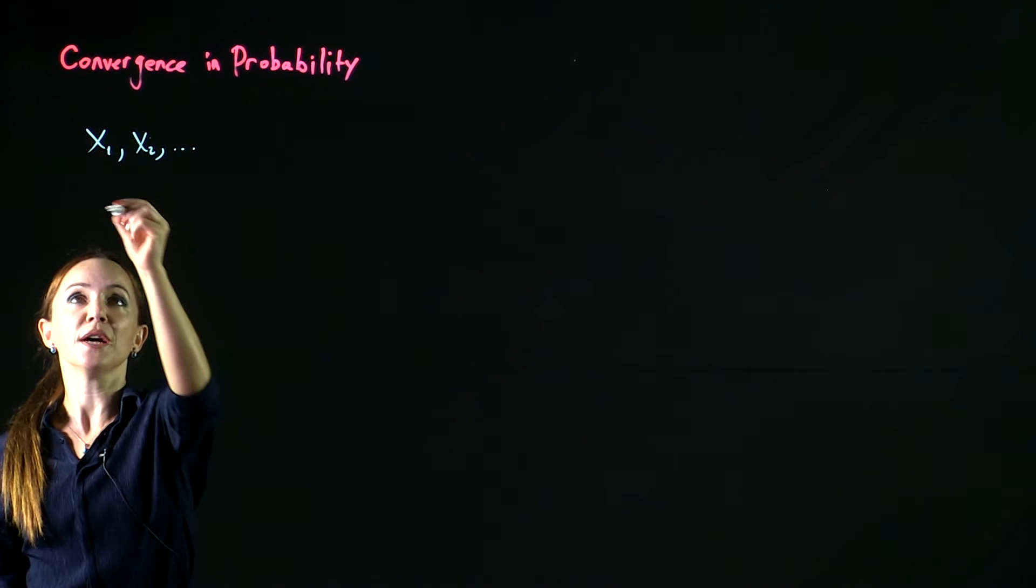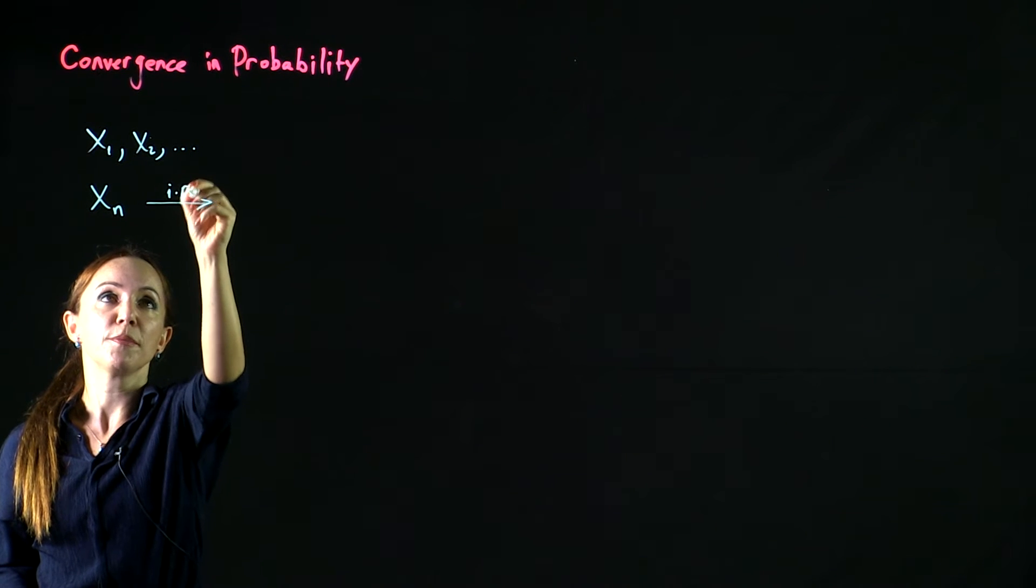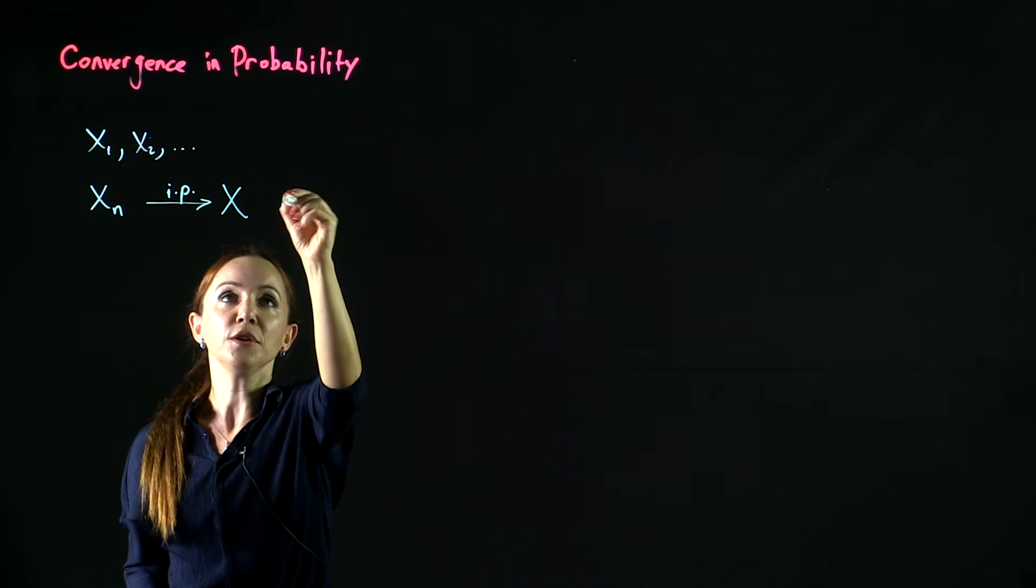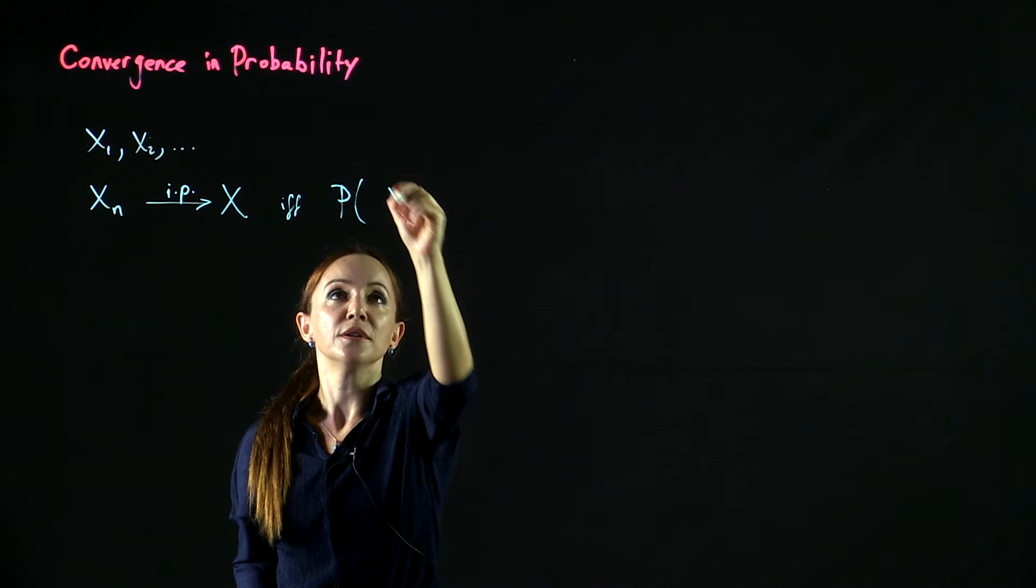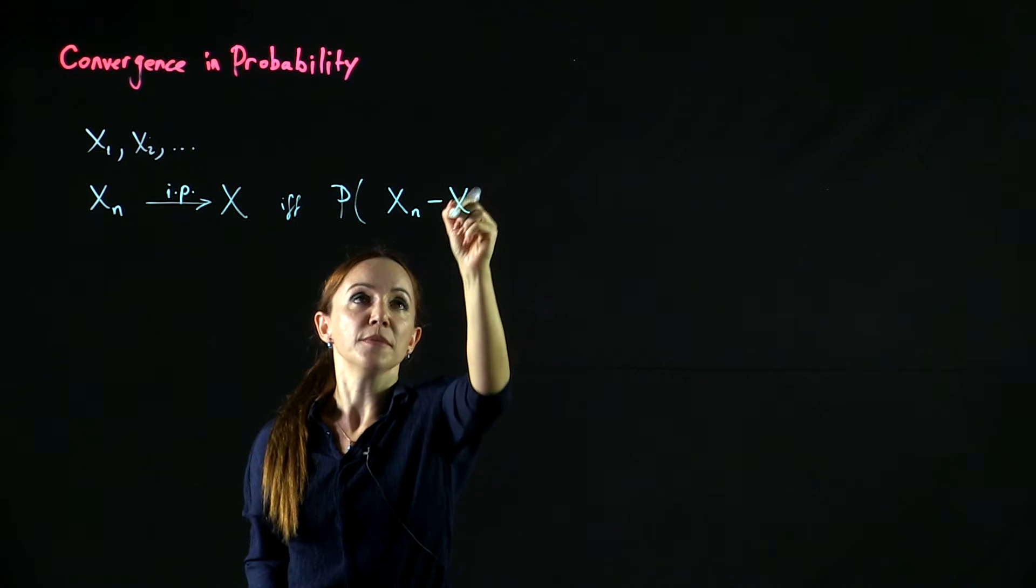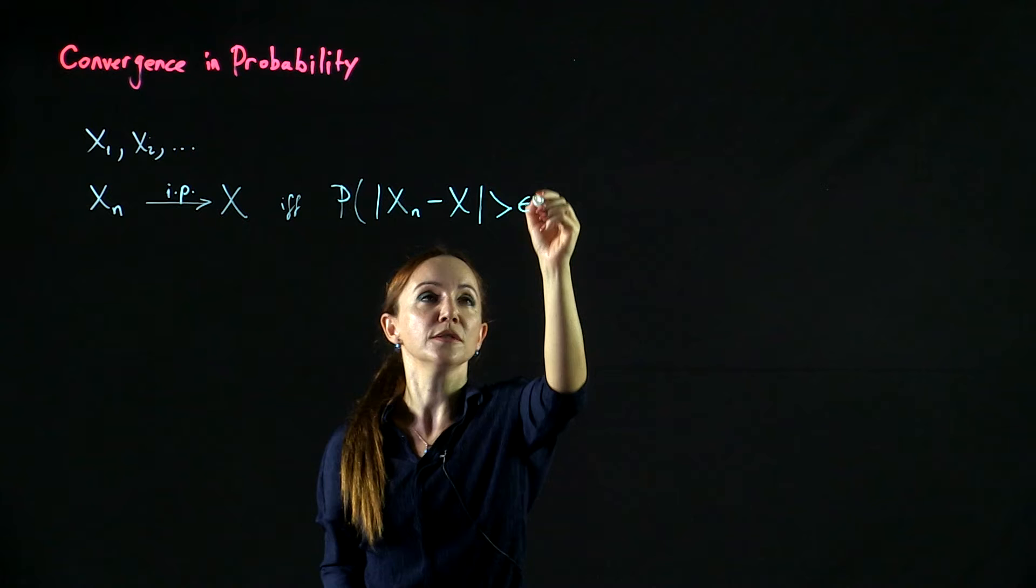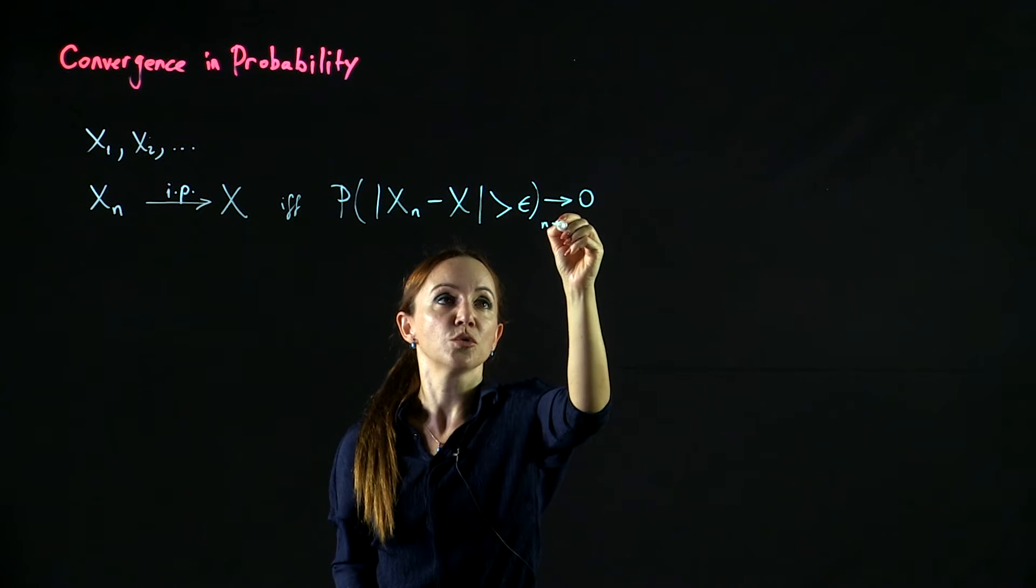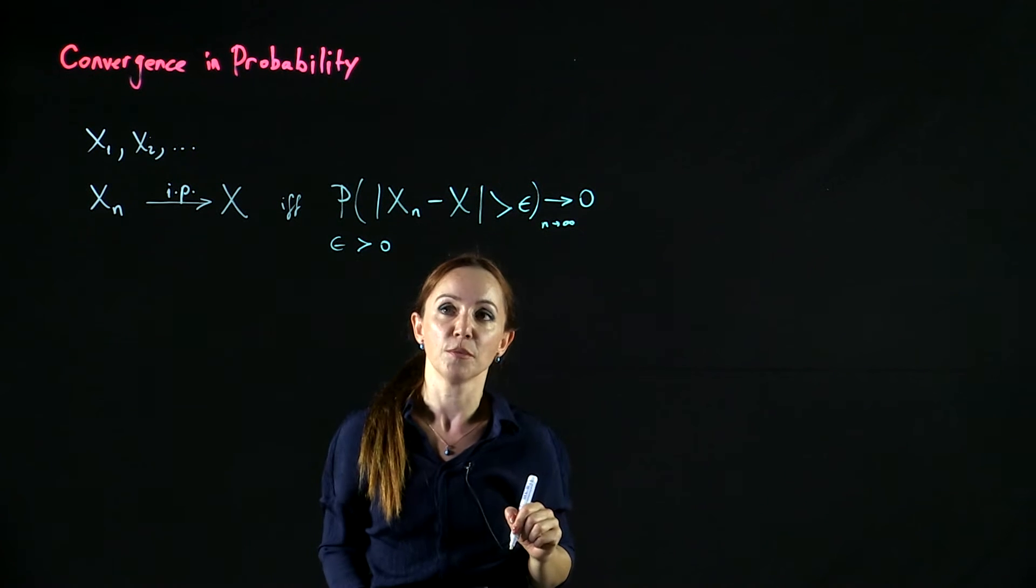We say that the sequence of random variables xn converges in probability to a random variable x if and only if the probability that the random variable xn differs from x by more than some positive value epsilon converges to 0 as n goes to infinity for any real number epsilon bigger than 0.